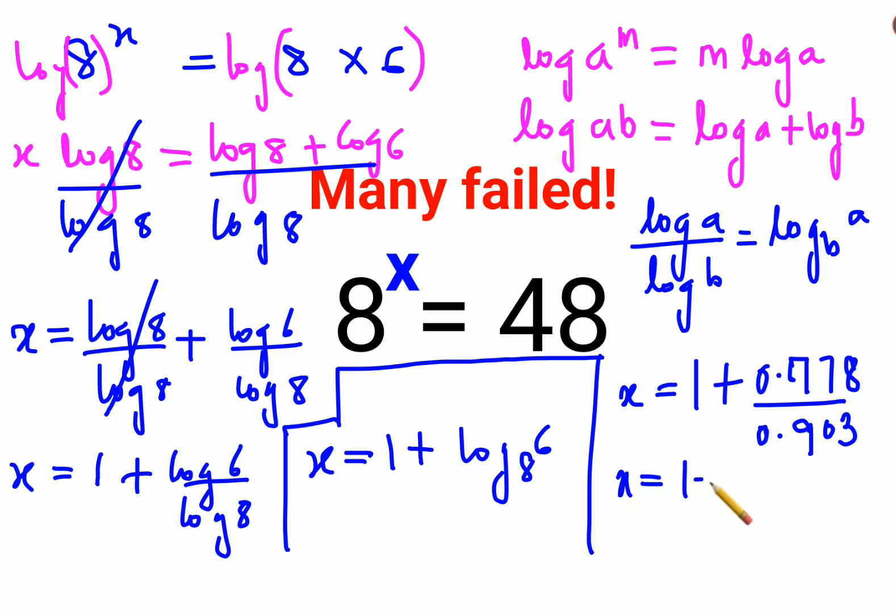So when you do the division, we'll get 1 plus 0.8616, so answer is 1.8616. That is the value for x.